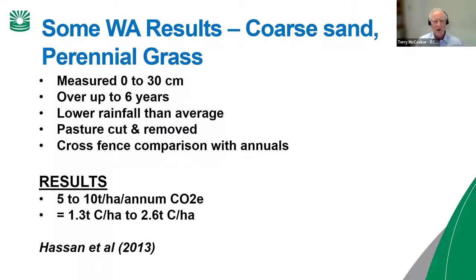I'll address the question about depth. Of the 400-odd thousand tons of CO2 we'll be going to market with shortly, over 50 percent of those credits will be issued from below 30 centimeters. If we've got time later I can talk about the effect of drought on that.